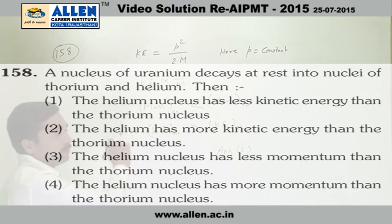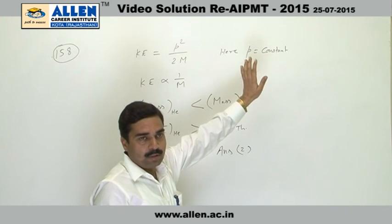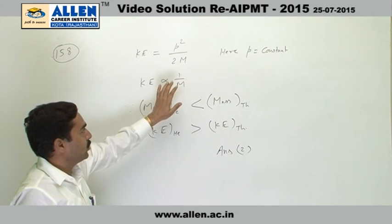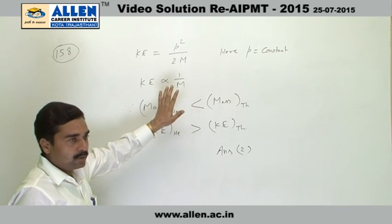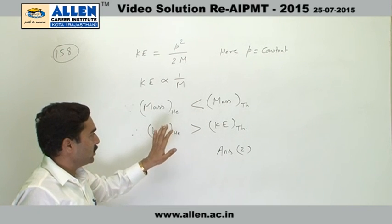Question number 158. Kinetic energy equal to P squared upon 2m. Here P is linear momentum. The linear momentum will be conserved. So kinetic energy is proportional to 1 upon m. Thorium mass is greater, so helium's kinetic energy is greater.